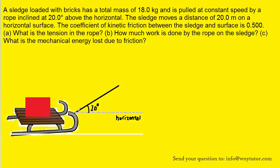Here we have the sledge being pulled by a rope. We've projected a line in a horizontal direction, labeled it horizontal, to show that the angle the rope makes with the horizontal is 20 degrees. Now for Part A, in order to find the tension present in the rope, we would want to draw a free body diagram of the sledge.